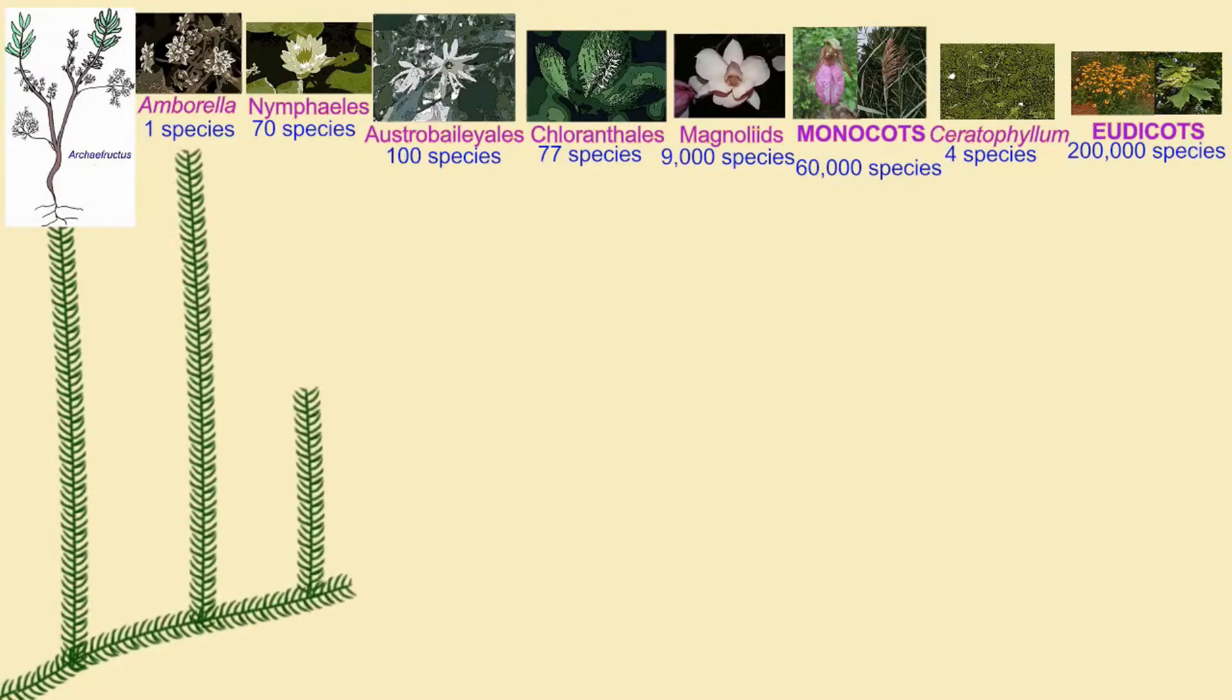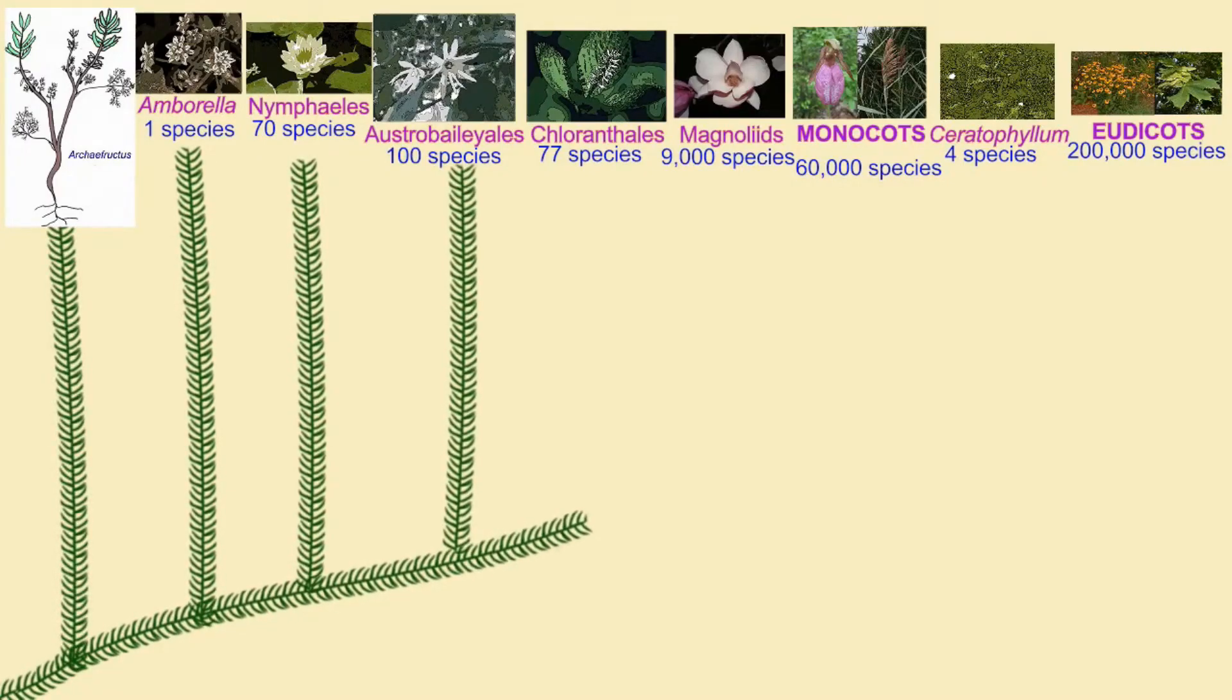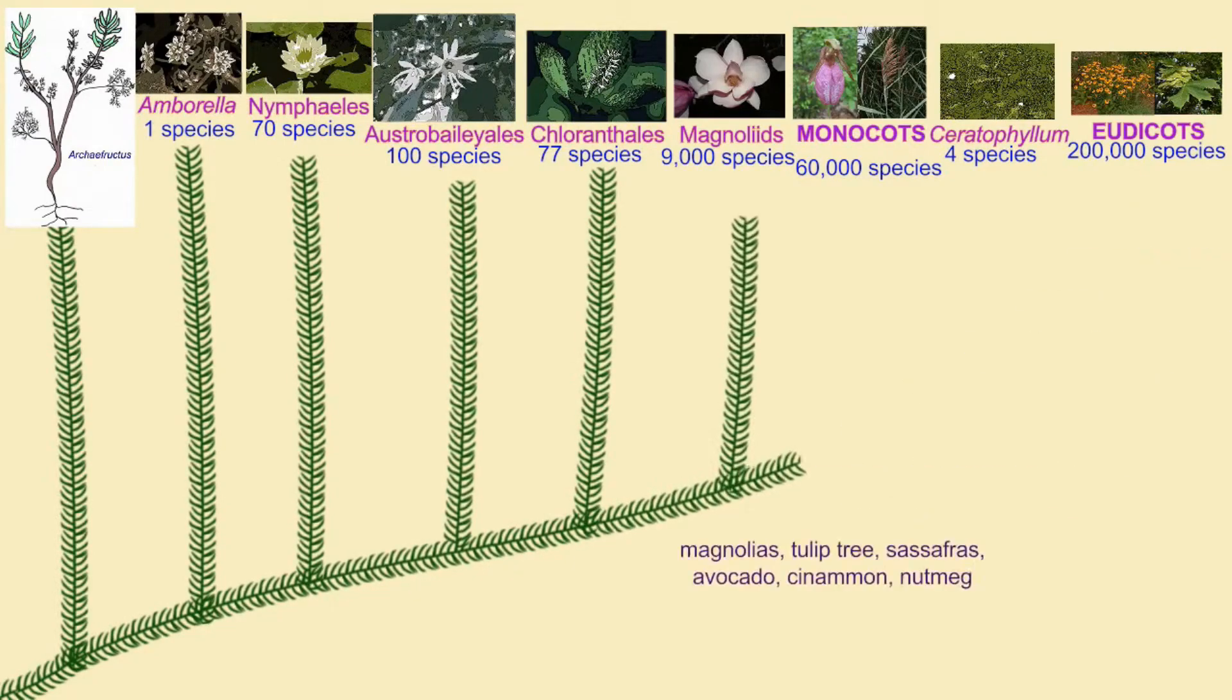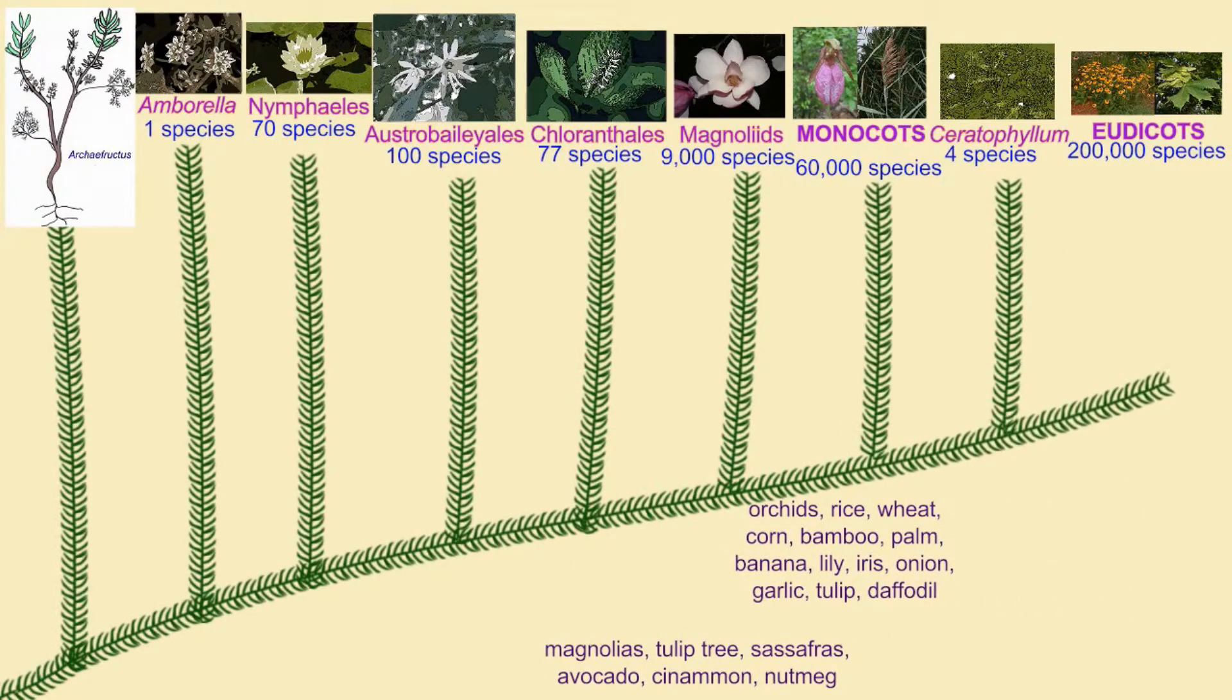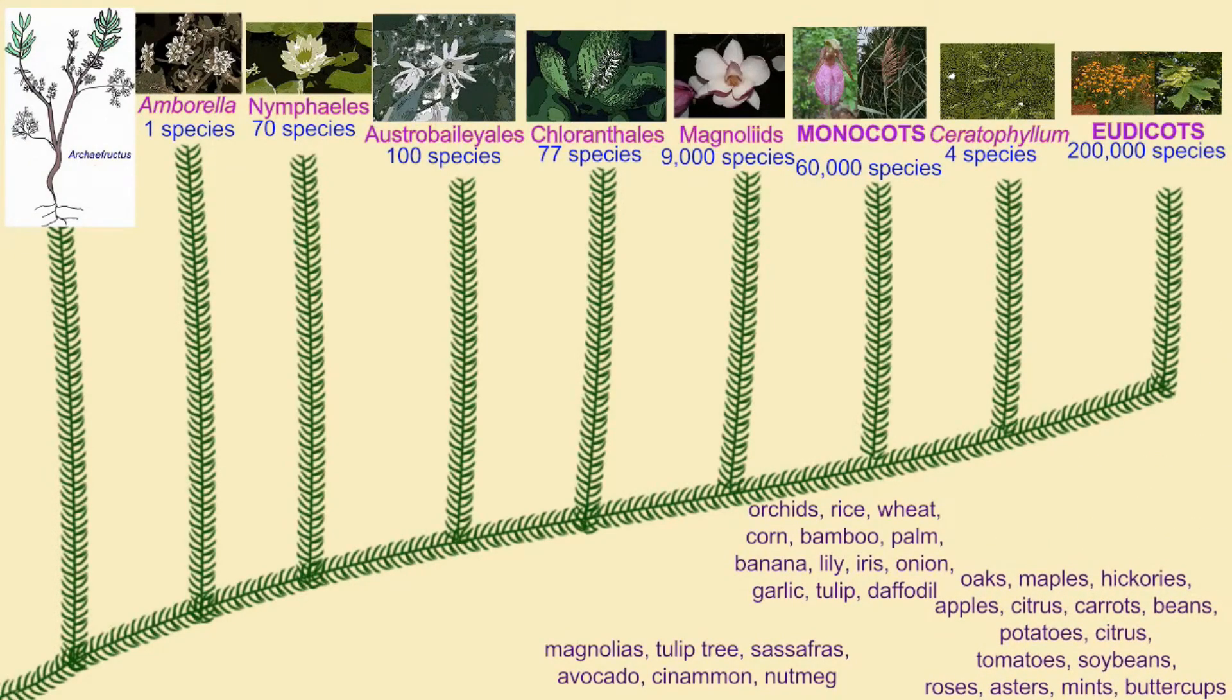Flowering plants diversified into two great lineages: the monocots and the dicots, which compose most species of flowering plants. They differ in a number of features, including their leaves.